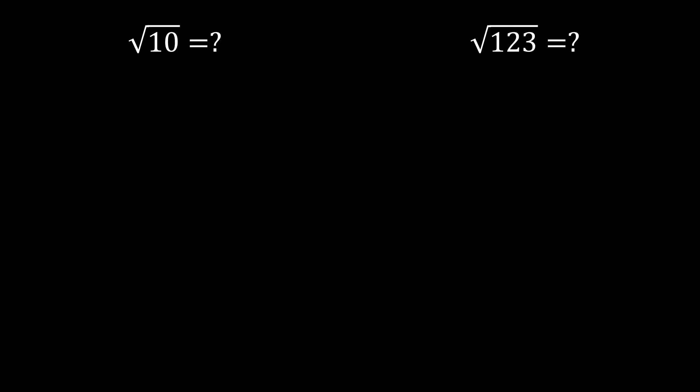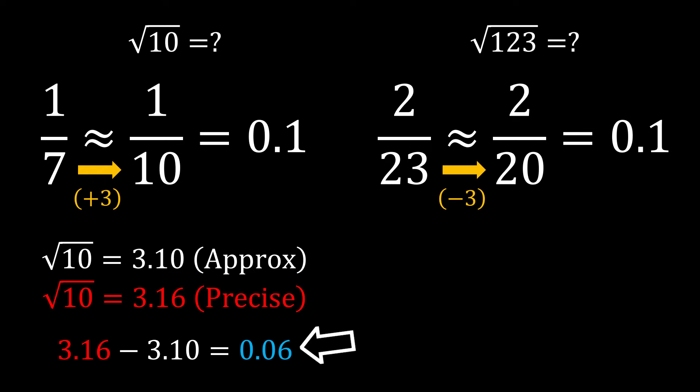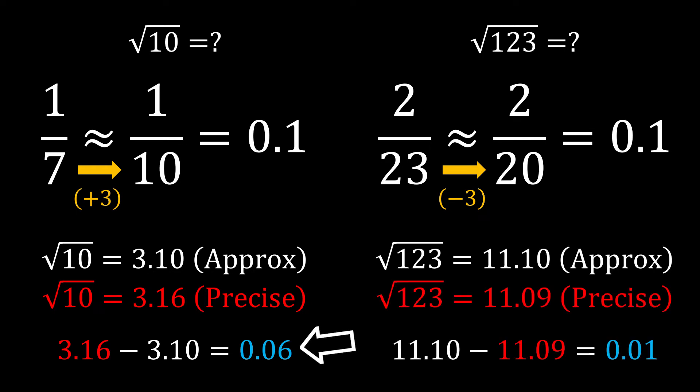And when you compare this to our previous question, where we converted 1 on 7 to 1 on 10, which is 3 units apart, we made the same conversion from 2 on 23 to 2 on 20, because that's also 3 units apart. And yet the previous answer was off by 0.06 units, while this one's only off by 0.01. So clearly, we can see that as the problem gets larger, the estimations become more accurate.